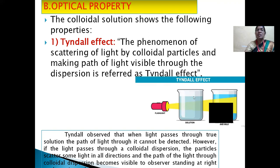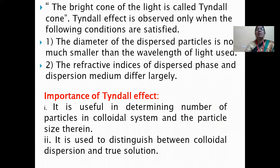Whenever light passes through a true solution, the path of light cannot be detected. But whenever it passes through a colloidal dispersion, the particles scatter some light in all directions. The path of the light through colloidal dispersion becomes visible to an observer standing at right angles to its path. The bright cone of light is called the Tyndall cone. The Tyndall effect is observed only when the diameter of the dispersed particle is not much smaller than the wavelength of light used, and the refractive indices of the dispersed phase and dispersion medium differ largely.